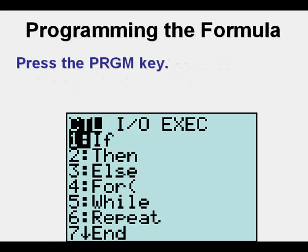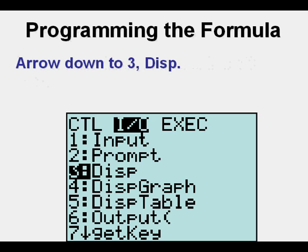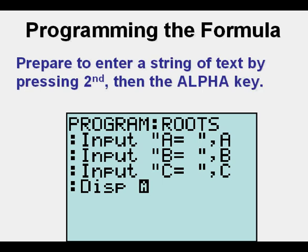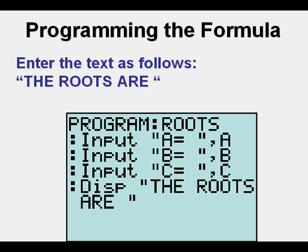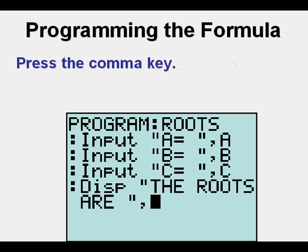Press the Program key, then arrow once to the right to the input-output menu. Arrow down to 3, Display, and press Enter. Prepare to enter a string of text by pressing Second, then the Alpha key. Enter the text: 'The Roots are'. Press the Alpha key to unlock Alpha mode. Press the Comma key.